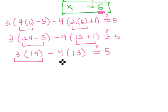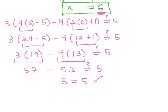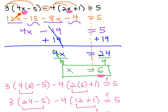When we do the multiplication from left to right, 3 times 19 is 57, minus 4 times 13 is 52, and we hope that equals 5, and sure enough, 57 minus 52 is 5. It really does equal 5 when x is equal to 6. We have found the number that when plugged in for this missing value x, we get a true equation.